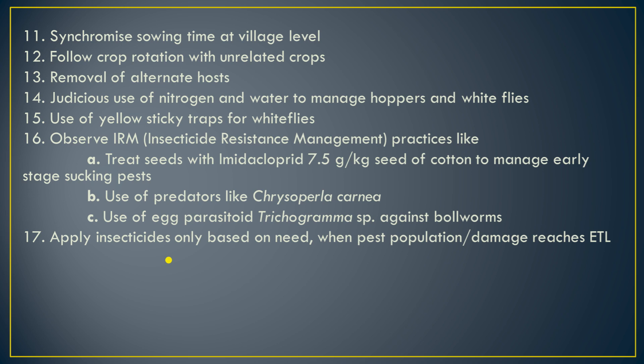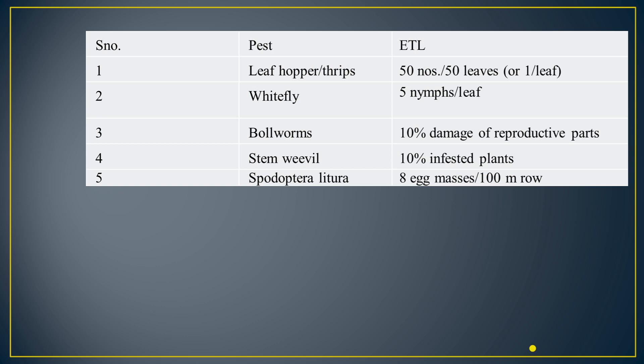Apply insecticides only on a need basis, since we should use chemicals as minimally as possible. Some ETL levels for insect pests of cotton: whiteflies — 5 nymphs per leaf; bollworm — 10% damage of reproductive parts; stem weevil — 10% infested plants; Spodoptera litura — 8 egg masses per 100 meter row. These are the ETL levels for some insect pests of cotton.